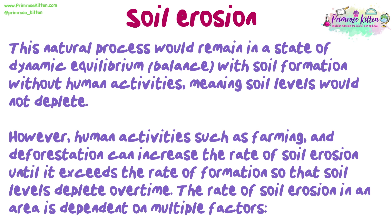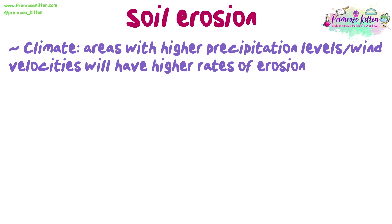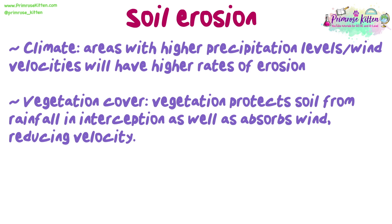The rate of soil erosion in an area is dependent on multiple factors. For climate, areas with higher precipitation levels and wind velocities will have higher rates of erosion. Vegetation cover: vegetation protects soil from rainfall through interception as well as absorbs wind, reducing velocity.